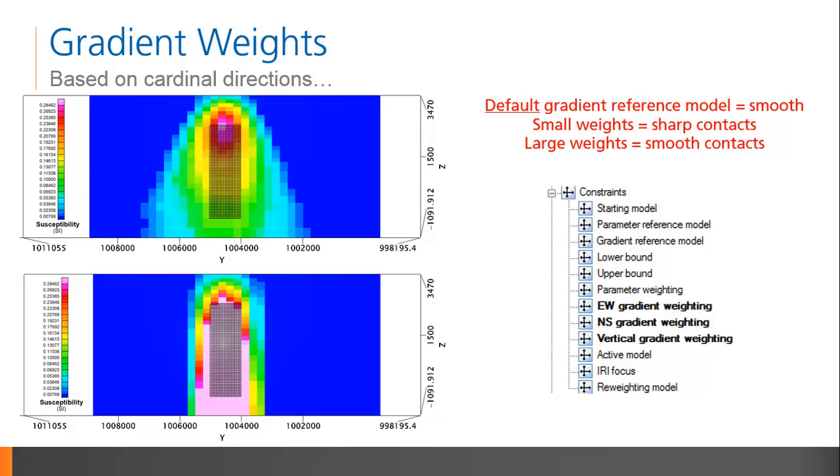Next, we look at a synthetic example of an intrusive body. The true body is shown in the gray mesh. It is a well-defined elongate intrusive corresponding to a positive magnetic anomaly. The default model incorporates a smooth gradient reference model and equal gradient weighting in all directions. The result is a smooth distribution of susceptibility that makes it difficult to interpret the intrusive's lateral extents.